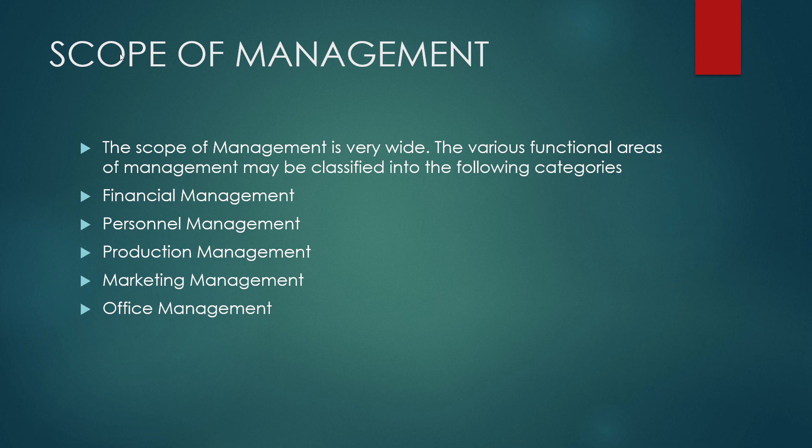Production management refers to the management of the production function in an organization — a function of land, labor, capital, and organization. It includes the production of the right goods in the right quantity, at the right time and at the right cost. It consists of activities such as designing the product, deciding the location and layout of the plant, purchase and storage of materials, planning and control of factory operations, repairs and maintenance, inventory control, quality control, and research and development.